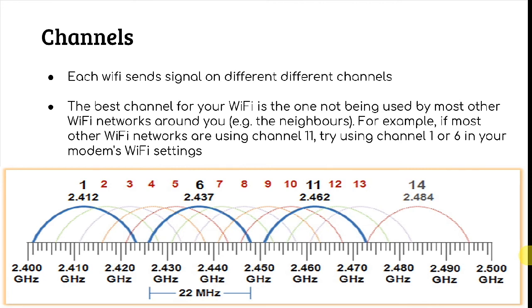What you can do: you can simply download some applications from your app store or the play store, and then you can check the channels around you. You can have a look at what the different Wi-Fi routers are using for different channels, and then after that you can go to your modem settings and change your Wi-Fi channel to get better internet speed.